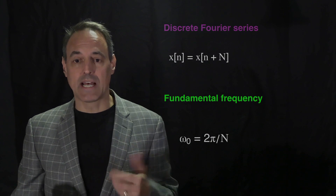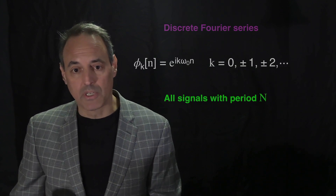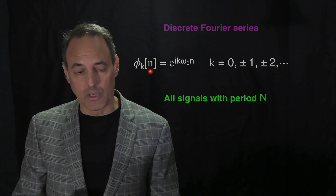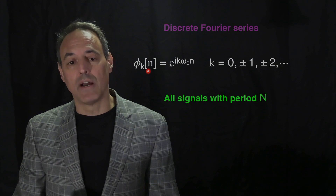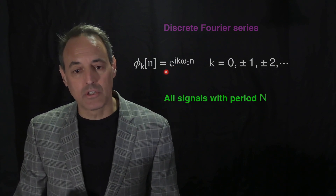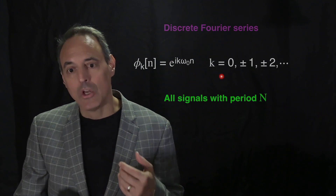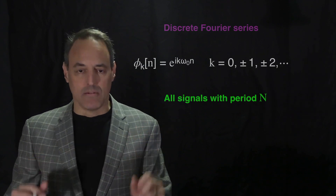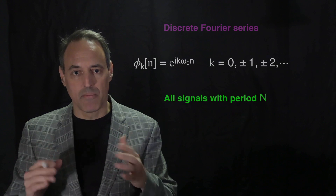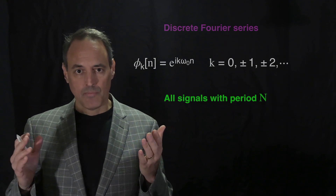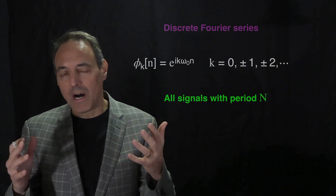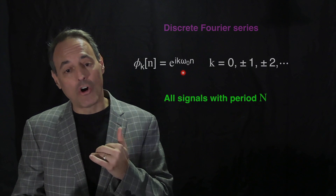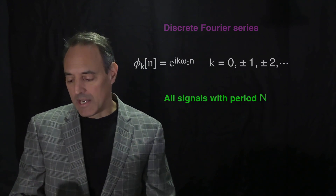The basic setup for the discrete Fourier series: just like the continuous case, we represent functions using a basis or coordinate system ψ_k(n) = e^(ikω₀n). These are our Fourier modes — cosines and sines — where k = 0, ±1, ±2, and so on. All these signals have period N; for example, just as cosine(t), cosine(2t), cosine(3t) all have period 2π, these all share the same underlying period N.